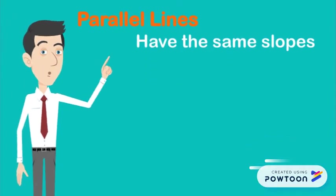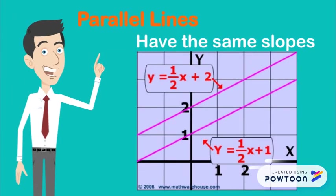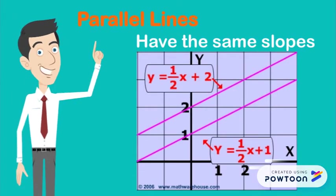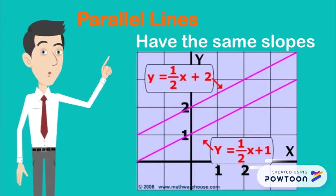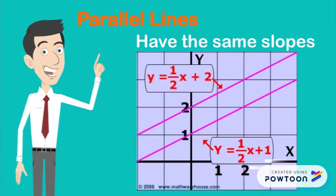Parallel lines. Remember, parallel lines will have the same slopes. In this example, the two slopes of the lines are 1 half.